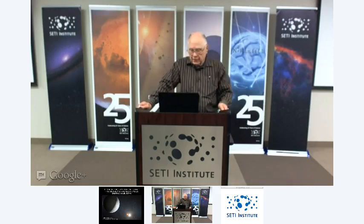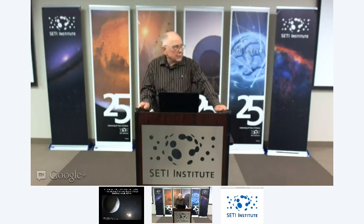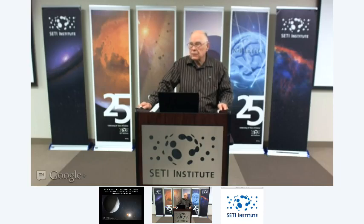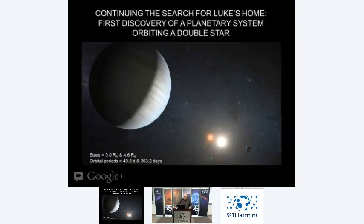This is a new discovery announced yesterday by a different group. It's another binary star system — a small red companion, and two planets: one with an orbital period of 50 days and another at 303 days, not very far from Earth's orbital period. It's in the habitable zone of its star, but again somewhat large — about four times the size of Earth — so it probably has a lot of gas and is likely not rocky. But we're moving toward finding rocky habitable-zone planets month by month as we make more discoveries.